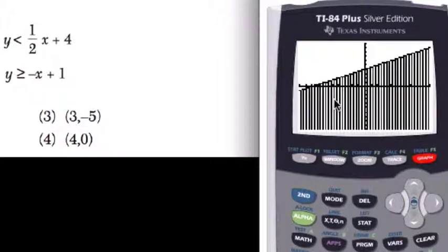Essentially, remember that the line itself is the balance between y and 0.5x plus 4. If y is less than that, it's this entire region below the line.